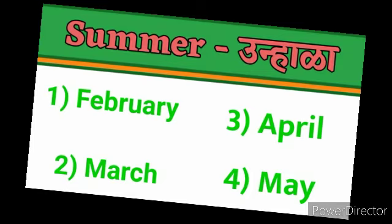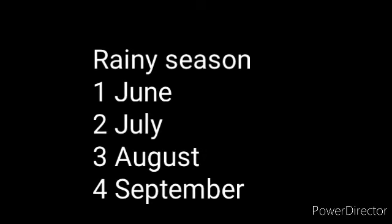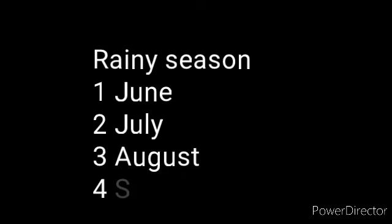Summer season: we find it in the months of February, March, April, and May. These four months have a summer season. Next, rainy season: in the months of June, July, August, and September. These four months have a rainy season.